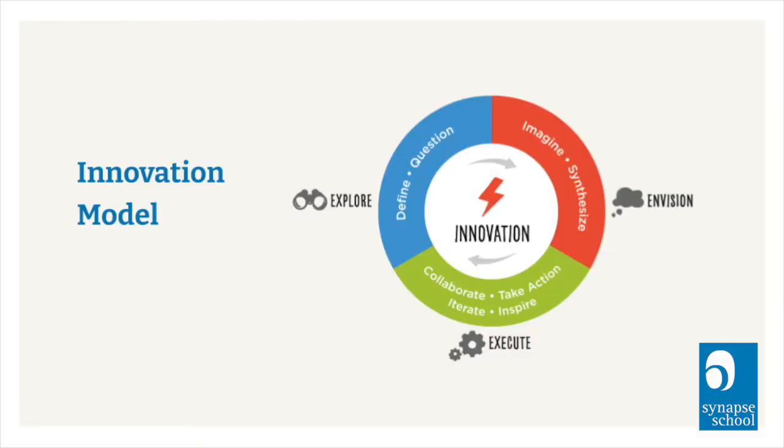Throughout Synapse, we teach innovation using the innovation model, which is basically a design thinking tool used for creative problem solving, where we ask students to explore, envision, and execute their ideas. Our goals for teaching innovation through the fine arts is to develop creative fluency for every student. We do this through academic and EQ integration. We do sequential skill development from kindergarten all the way through eighth grade, which is why we teach Performing Arts and Visual Arts to all students throughout their entire time at Synapse. And at no point are they asked to choose between one or the other.